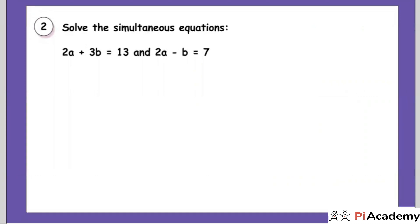Solve the simultaneous equation: 2a plus 3b equals 13, and 2a minus b equals 7. You have two minutes — that is more than enough. I'll solve this and you can compare your answers. Writing 2a minus b equals 7 here. I want to eliminate a — both equations have 2a, so I can subtract them.